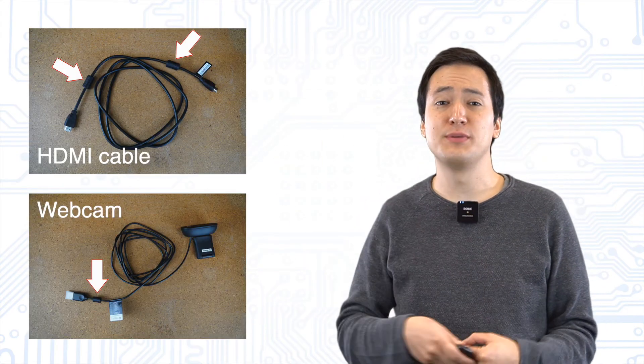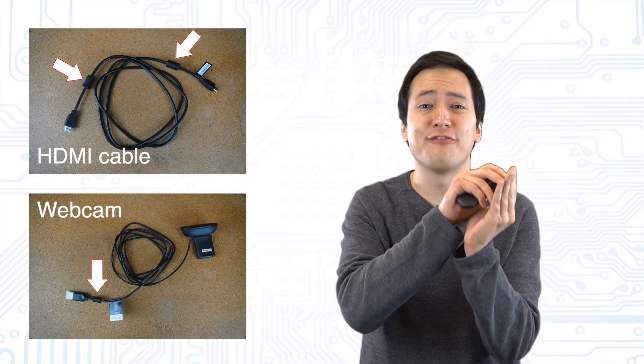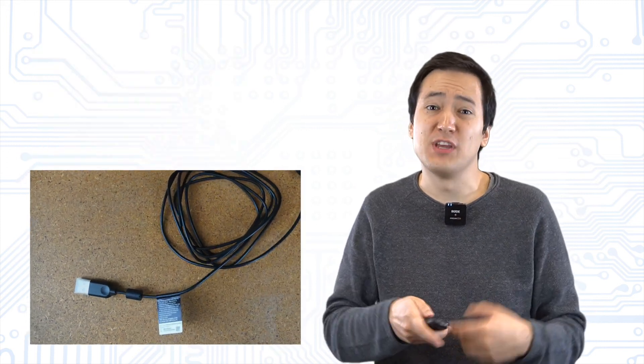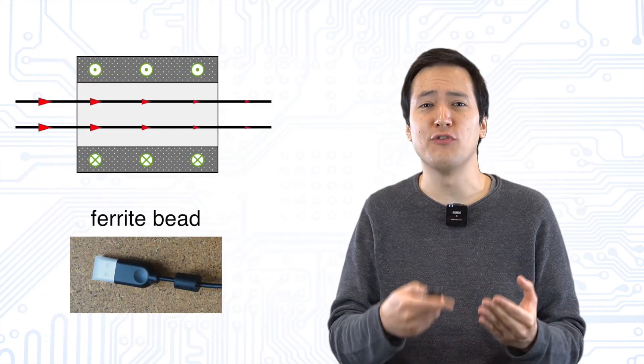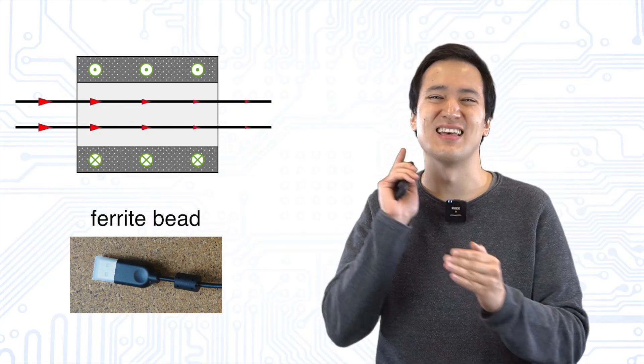And what is this ferrite bead for now? Often this is just a simple clamp on ferrite core located at the end of a cable or antenna. It works like the common mode choke explained before. A common mode signal sees a large inductance and is thus filtered.